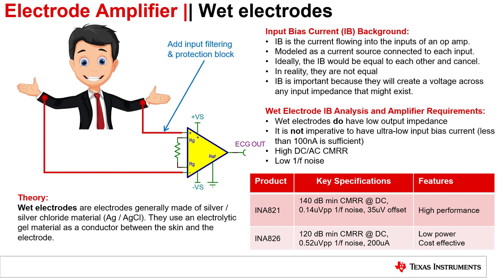In any ECG system, there are two types of electrodes: wet and dry. Wet electrodes are generally made of silver or silver chloride material and use an electrolyte gel as a conductor between the skin and the electrode. Input bias current is the current flowing into the inputs of an op amp. Ideally, the two input bias currents would be equal and cancel. In reality, the difference of these currents is defined as input offset current. The bias currents are important because they create a voltage across any input impedance. If you have a source with high output impedance, you want an amplifier with low input bias current to avoid a large offset error at the output. Wet electrodes do not have low output impedance, so it is not imperative to have low input bias current on the amplifier.